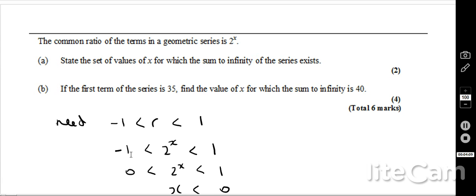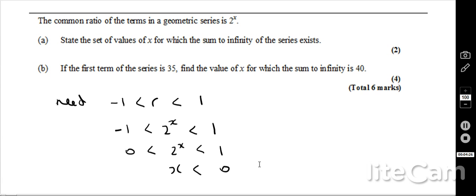Okay, so therefore, we need 2 to the power of x to be between minus 1 and 1 as well. Hopefully, you might notice that 2 to the x can never be negative. We can never get a negative number. Therefore, actually the boundary is going to be between 0 and 1.